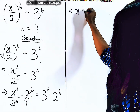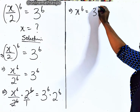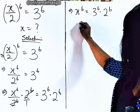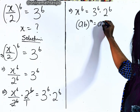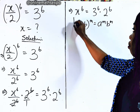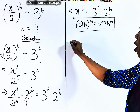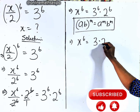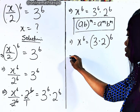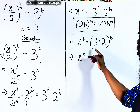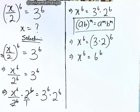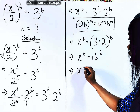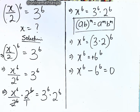We clear the division by 2 to the power of 6 — multiply both sides by 2 to the power of 6. This cancels out on the left, so we have x to the power of 6 equals 3 to the power of 6 multiplied by 2 to the power of 6. Remember, a to the power of m times b to the power of m equals (ab) to the power of m. So x to the power of 6 equals (3 × 2) to the power of 6, which is 6 to the power of 6. Since this is positive, we move it to the left: x to the power of 6 minus 6 to the power of 6 equals 0.